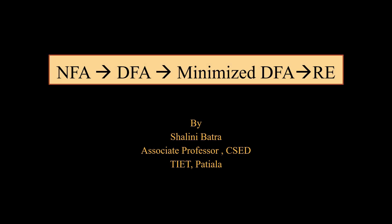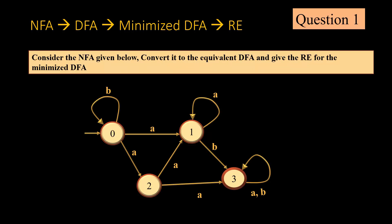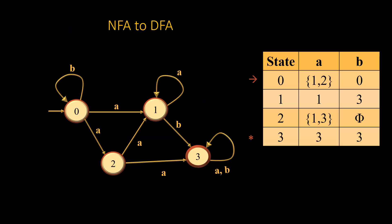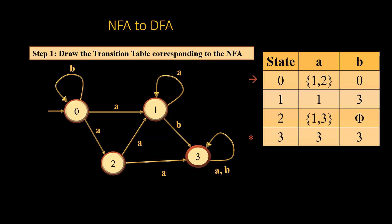Today we will be considering the problem in which we have an NFA, convert it into a DFA, then minimize the DFA, and finally derive a regular expression. Consider the NFA given below — it has one final state and one start state. The first step whenever we come across an NFA is to draw the transition table corresponding to it.